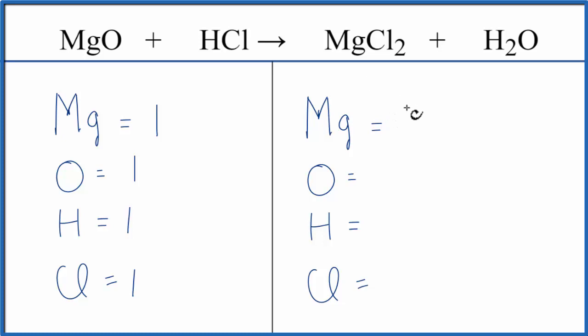On the product side of the equation, we have one Mg, one oxygen, two hydrogens, and two chlorine atoms.